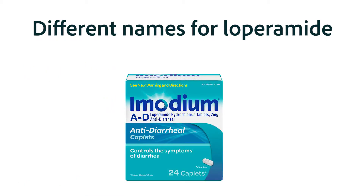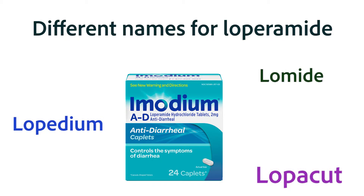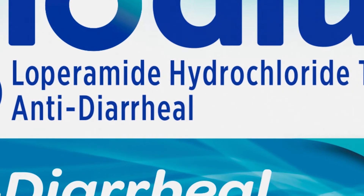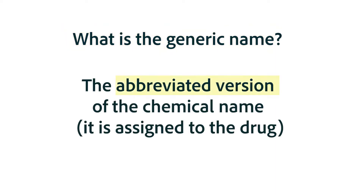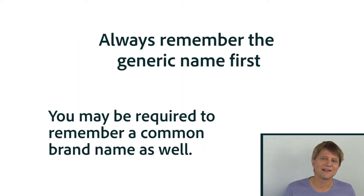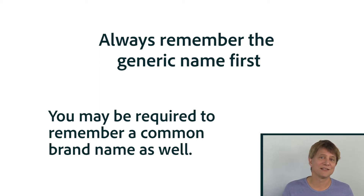There can be literally hundreds of brand names in the world for any drug, and each of those will have the generic name on the label. So you can see that the generic name is the most important one to remember. The generic name of a drug is the abbreviated version of the chemical name. I'll be showing you some examples of how we achieve that generic name. You may eventually need to know at least a couple of the brand names, but in the first instance it's always best to remember the generic name.